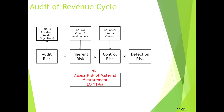Picking up with learning objective six, we're going to take all the information obtained about the client, the environment, and the internal control over financial reporting and do a risk assessment of material misstatement. We'll quantify or designate the different levels of inherent risk and control risk, then use our audit risk set for the engagement to calculate detection risk and determine subsequent procedures.